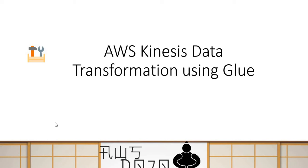Hello everyone, welcome to AWS Tutorials. In AWS Tutorials we provide workshops and exercises to learn about AWS services. These workshops and exercises are published to our website aws-dozer.com. Today we are going to talk about how you can use Kinesis delivery stream to transform data using Glue.